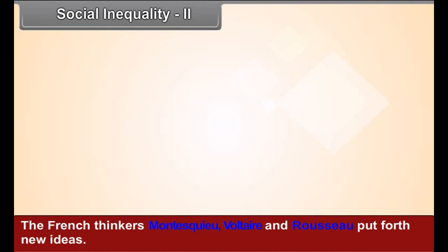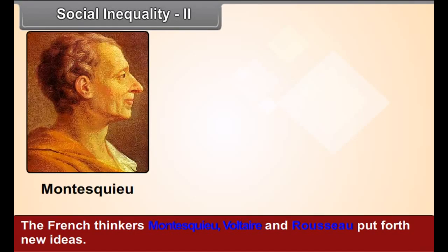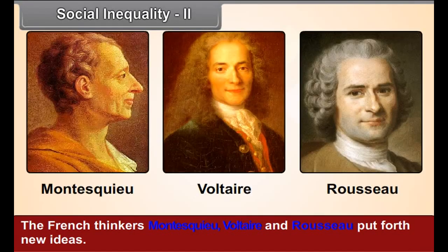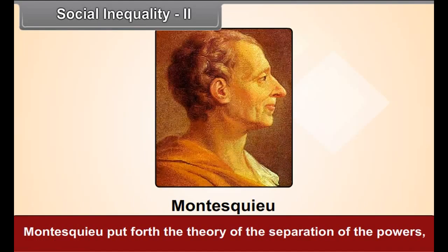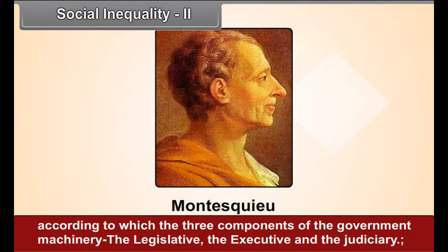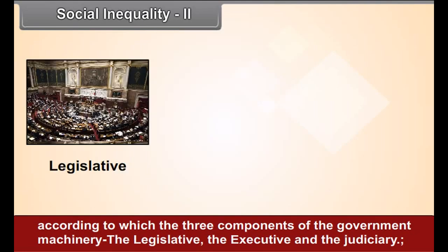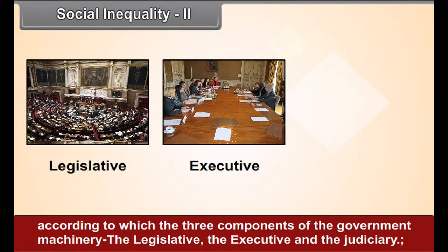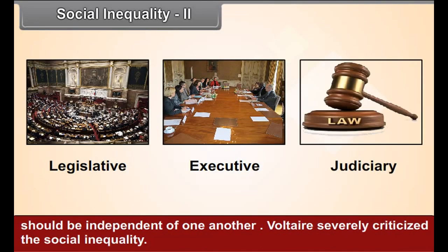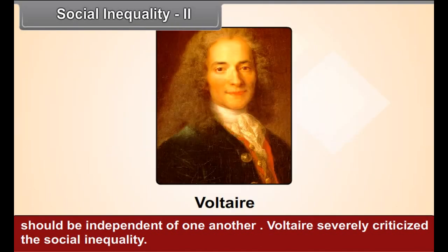The French thinkers Montesquieu, Voltaire, and Rousseau put forth new ideas. Montesquieu put forth the theory of the separation of powers, according to which the three components of the government machinery — the legislative, the executive, and the judiciary — should be independent of one another. Voltaire civilly criticised the social inequality.